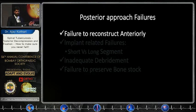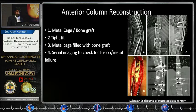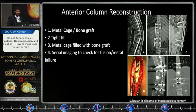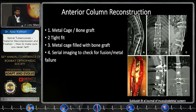Failure to reconstruct anteriorly is the most critical issue. Anterior column reconstruction is considered one of the most important steps. When you perform anterior debridement without reconstructing anteriorly, there is a very high chance of failure. A few years ago, we used to do decompression and posterior stabilization using hardware, sublaminar wires, transpedicular decompression, and long constructs.